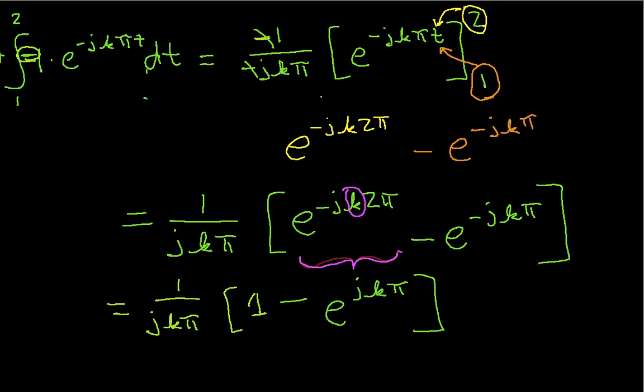But they'll get even simpler still, at least eventually. If I look at - well, and I missed a minus sign here - if I look at e^(-jkπ), again I can write this as cosine kπ minus j sine kπ.